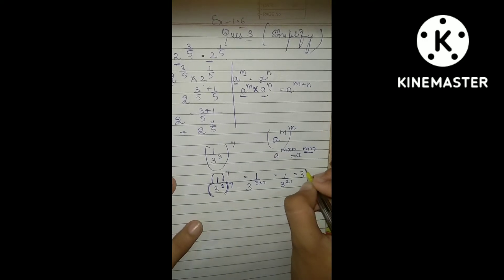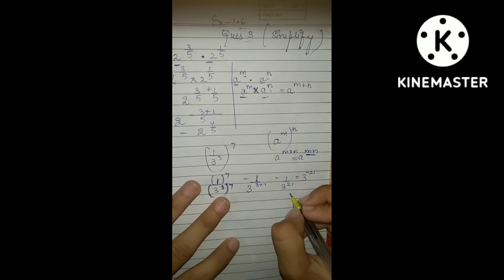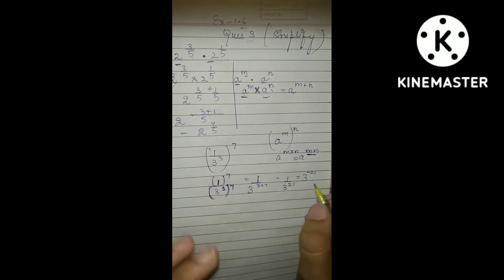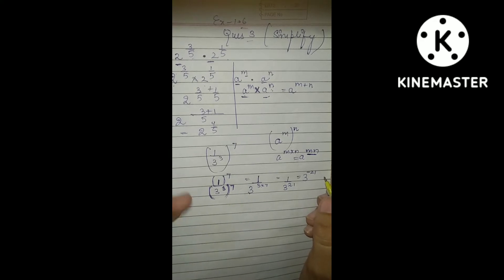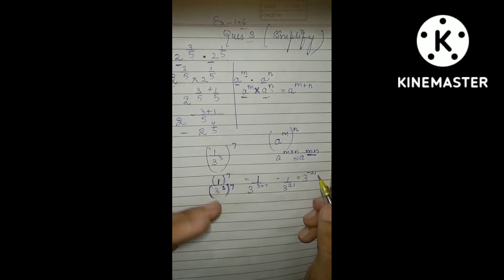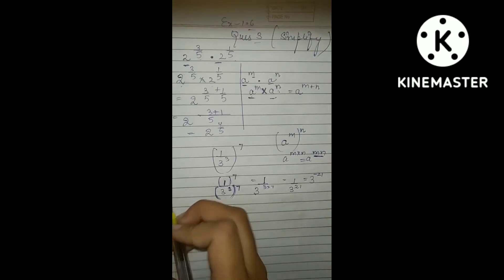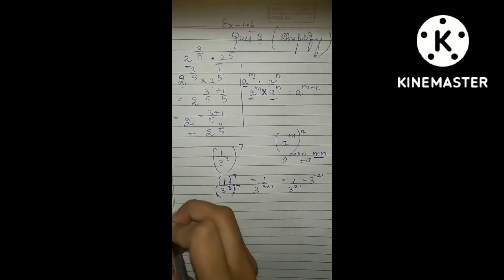So the result is 1 by 3 raised to the power 21. If you take this up it will be minus 21, if you take it down it will be plus 21. When simplifying: if it is plus then it becomes minus, and if it is minus then it becomes plus.